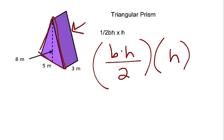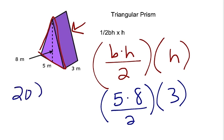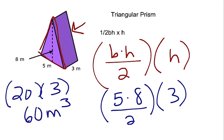We plug in the values: the base of the triangle is 5, the height of the triangle is 8, and we divide that by 2, then multiply by the height of the prism, which is the distance from one triangle to the other — that is 3. So 5 times 8 is 40, divided by 2 is 20, times 3 equals 60. The unit is meters cubed, so the answer is 60 cubic meters.